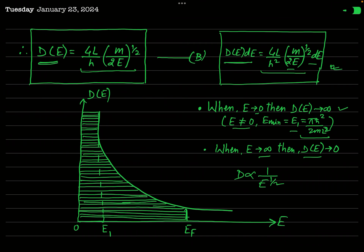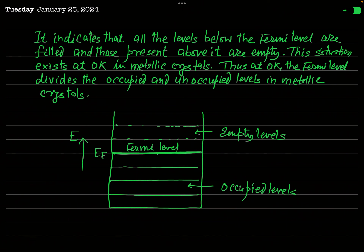All energy levels are filled by electrons up to the Fermi level, while all levels above EF are empty. In a metallic crystal at 0 Kelvin, all levels below the Fermi level are occupied and all levels above it are empty. The Fermi level thus differentiates the occupied from the unoccupied energy levels at 0 K.